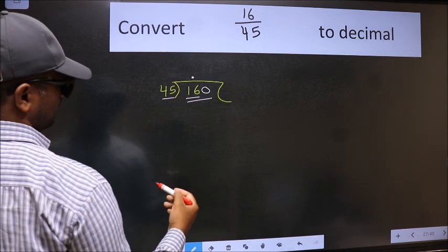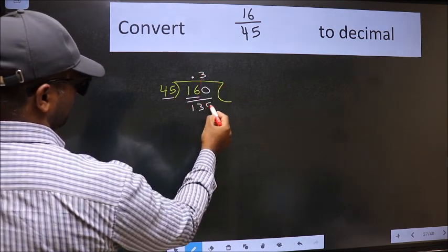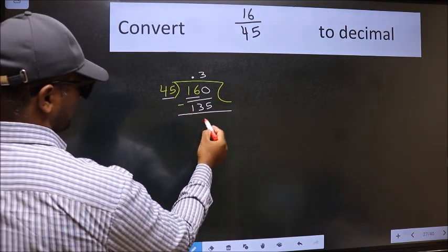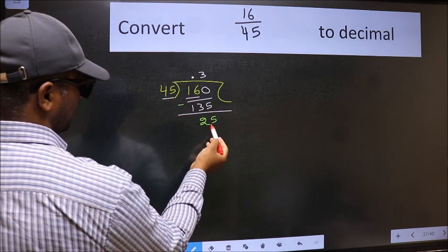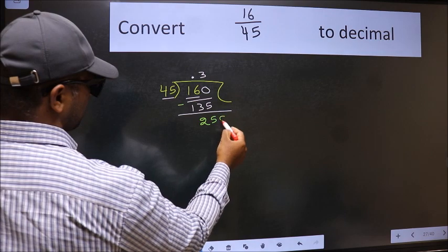45 threes is 135. Now we should subtract, we get 25. 25 is smaller than 45 and we already have the decimal, so directly take 0. So 250. A number close to 250 in the 45 table is 45 fives, 225.